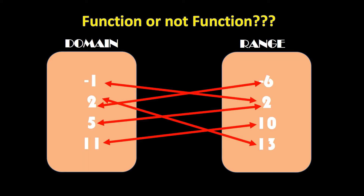A function is a special type of relation in which each element or component of your domain is paired to exactly one element or component of your range. Let us try to examine this representation in terms of mapping or diagramming. We will be examining whether the following representations are a function or not a function.